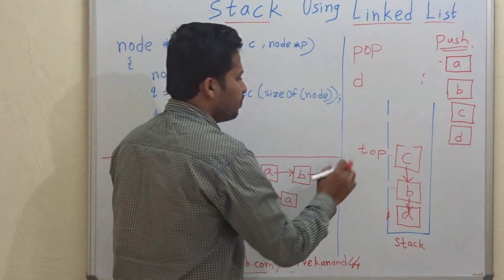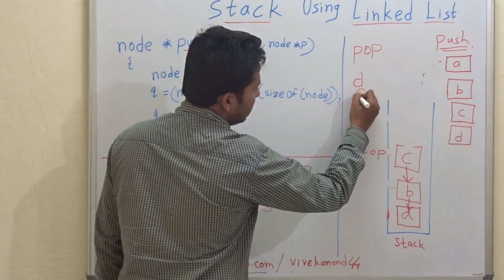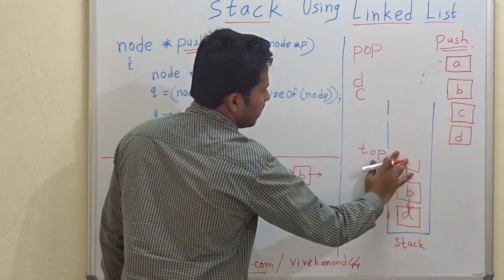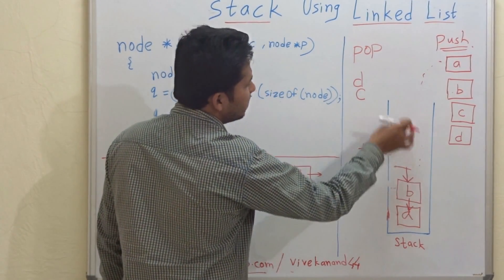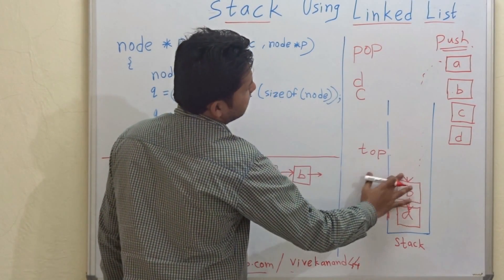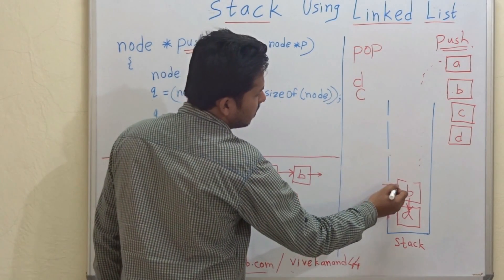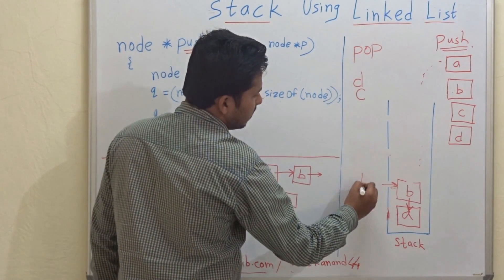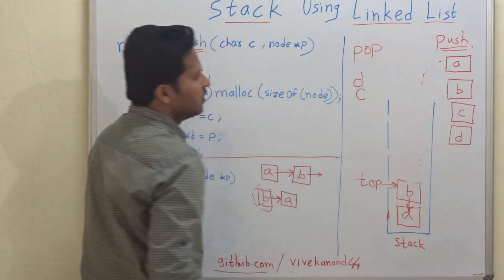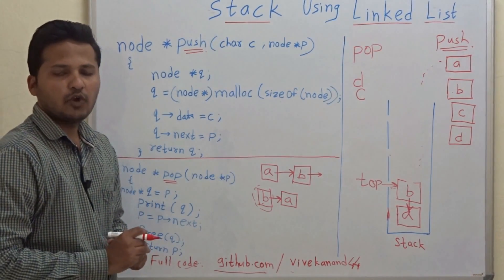If you want to pop again, then C will be returned and the top will point to the next node, that is B. This is how we pop elements from the stack.